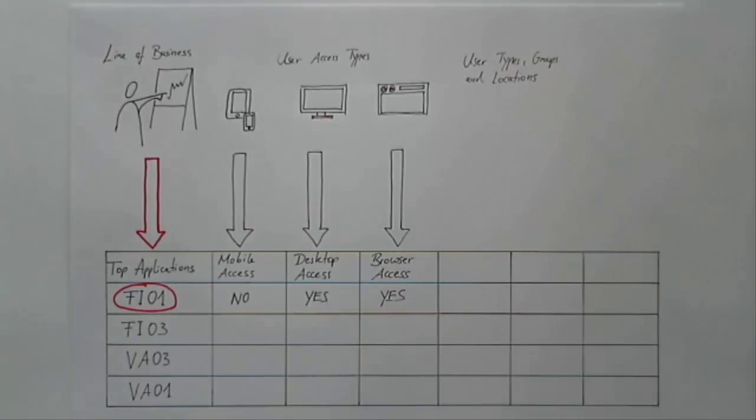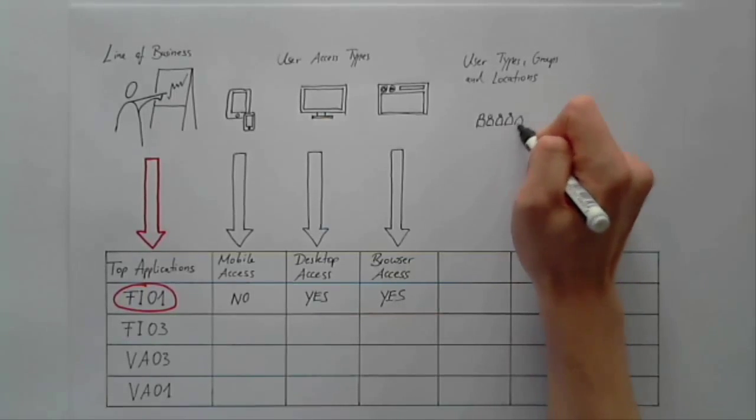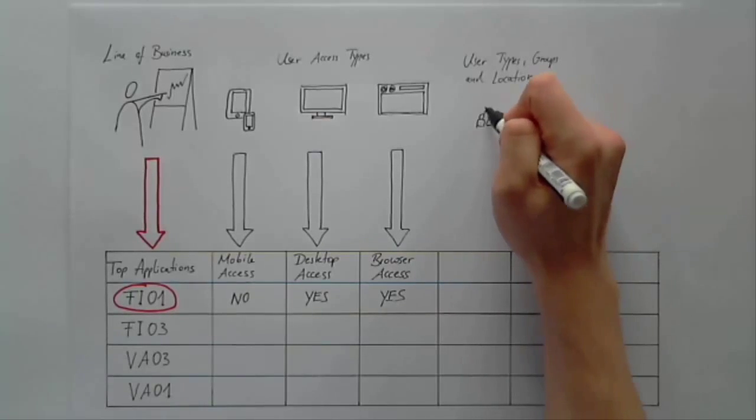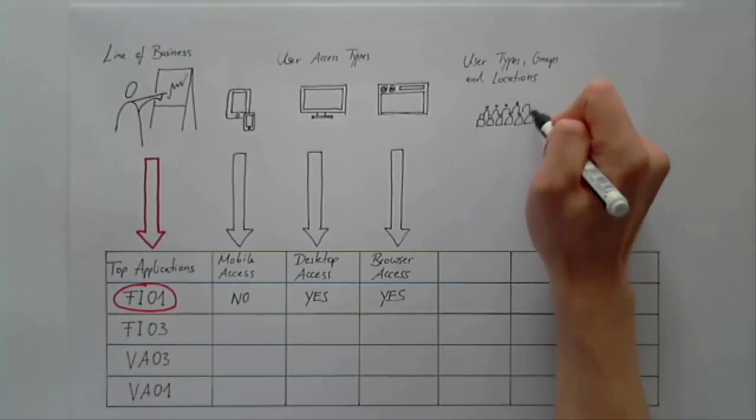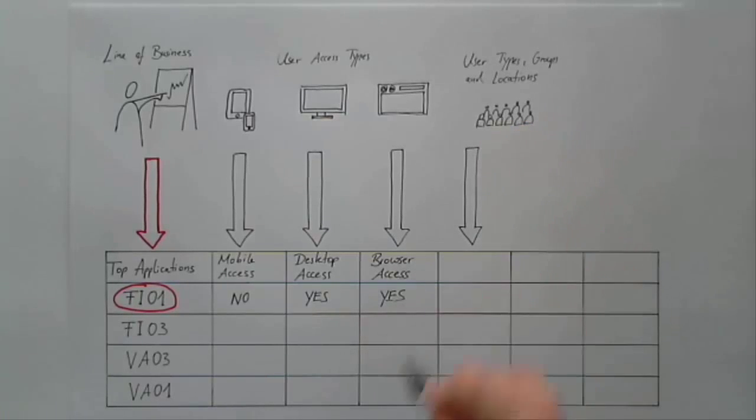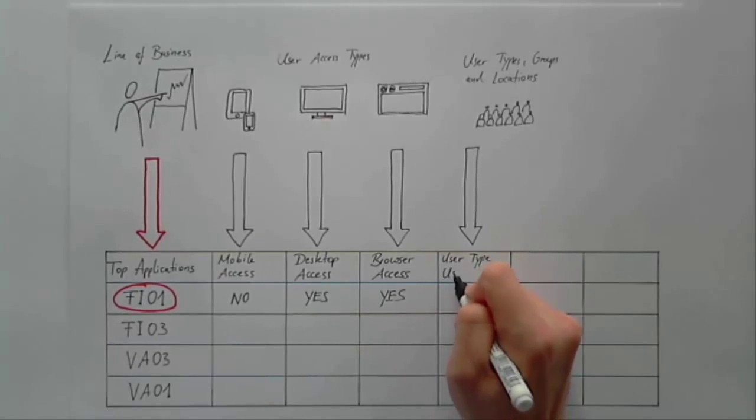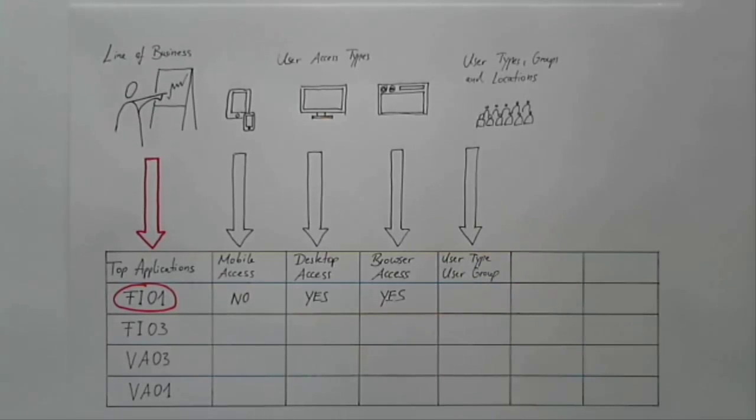In the first part of this video, I mentioned the importance of understanding your users and their environment. In addition to your observations and surveys, try to gather structured information about who your users are and where they are located. For each application in your list, it can be a valuable insight to know whether it is used by power users who use it every day or occasionally by almost every employee.